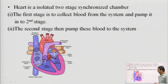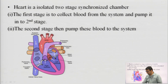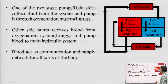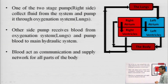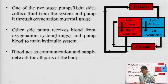The heart is divided into two stage chambers. The first stage is to collect blood from the system and pump it into the second stage, and the second stage pumps the blood back to the system. We have four chambers: left atrium, left ventricle, right atrium, and right ventricle. Inside these chambers, we have different valves like the mitral valve, aortic valve, tricuspid valve, and pulmonary valve — four different types of valves.